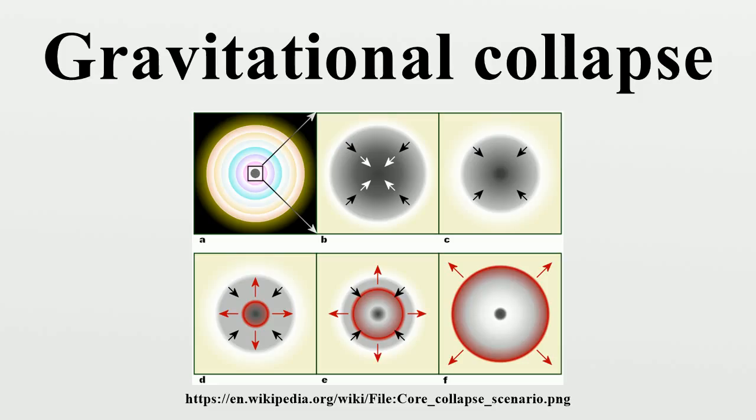Once a body collapses to within its Schwarzschild radius it forms what is called a black hole, meaning a space-time region from which not even light can escape. It follows from a theorem of Roger Penrose that the subsequent formation of some kind of singularity is inevitable.